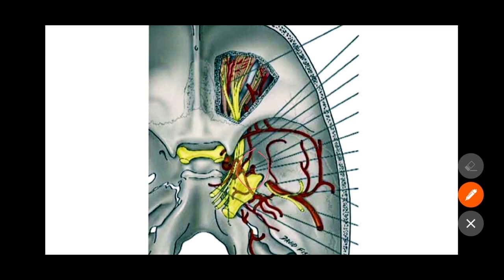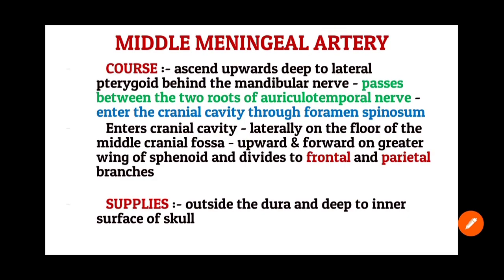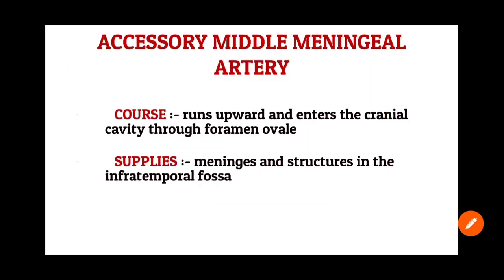The second branch, A, is the accessory middle meningeal artery. It moves upwards and enters the cranial cavity through the foramen ovale. The middle meningeal artery supplies the dura and the deep surface of the inner surface of the skull, while the accessory middle meningeal artery supplies the meninges and structures in the infratemporal fossa.